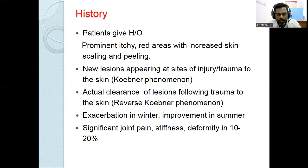The classical presentation is sharply demarcated erythematous plaques with silvery white scales. Koebner's isomorphic phenomenon refers to new lesions appearing at sites of injury or trauma to the skin. Reverse Koebner's phenomenon is the actual clearance of lesions following trauma to the skin.